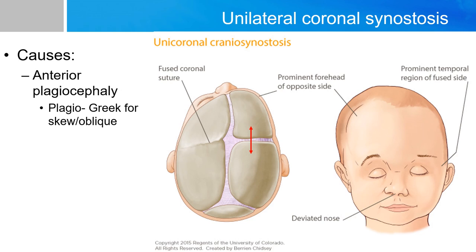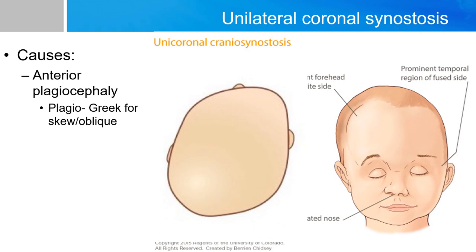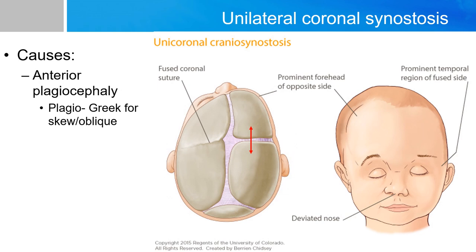When the coronal suture is fused prematurely on one side, growth is restricted longitudinally on that side, and compensatory growth occurs forward at the contralateral coronal suture, giving a characteristic skewed or oblique look. Hence the name plagiocephaly, with plagio meaning 'skewed or oblique' in Greek. This is called anterior plagiocephaly because a fused lambdoid suture can also cause plagiocephaly, which is called posterior plagiocephaly.